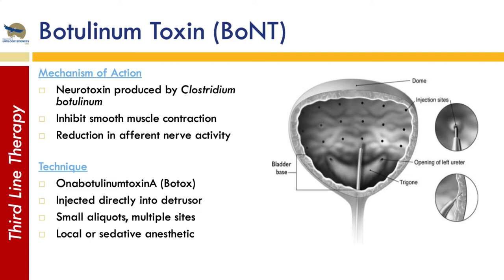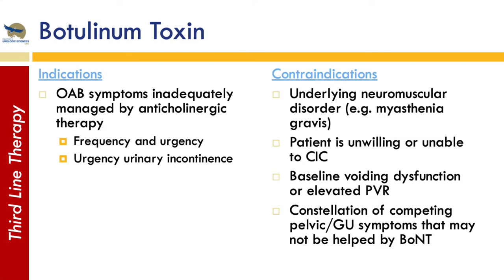The main indication for botulinum toxin is OAB symptoms inadequately managed by anticholinergic or pharmacologic therapy. Contraindications include underlying muscular disorders, and because it carries a risk of urinary retention especially at higher doses, it's contraindicated if the patient is unwilling or unable to perform clean intermittent catheterization for a finite period. You'd also be cautious in patients with elevated baseline post-void residual or absent detrusor function, as they would be at higher risk for urinary retention.